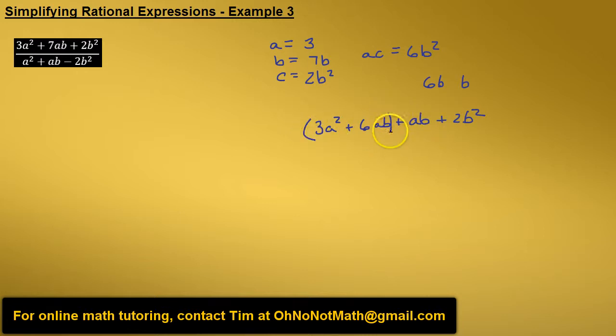We're going to group the first two terms and group the last two, and now let's factor this first one. We can pull out a 3 and an a. So 3a times a gives us 3a squared plus 2b, 3a times 2b gives us 6ab.